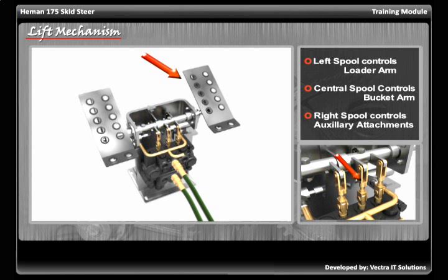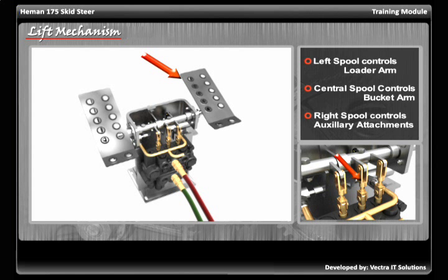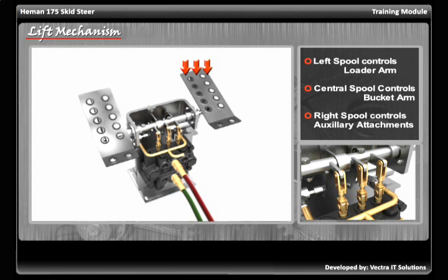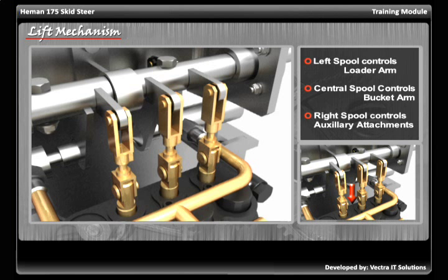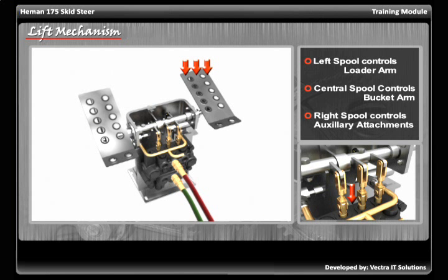The central spool of the valve block is connected to the right foot pedal. When the pedal is pushed down by the toe of the operator, it results in pushing down the spool. As the spool is pushed downwards, the pressurized oil escapes from the upper port.